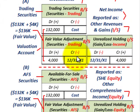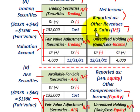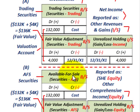To recap: for both trading securities and available-for-sale securities, you set up your securities account and a fair value adjustment account — a valuation account. You don't make adjustments directly to the securities accounts; you use the separate valuation account each period. Then you record the unrealized holding gain or loss. For trading securities, it goes directly to the income statement as other revenues and gains. For available-for-sale securities, the unrealized holding gain or loss is part of equity, reported as other comprehensive income in shareholders' equity. That's the basic difference between available-for-sale and trading securities.